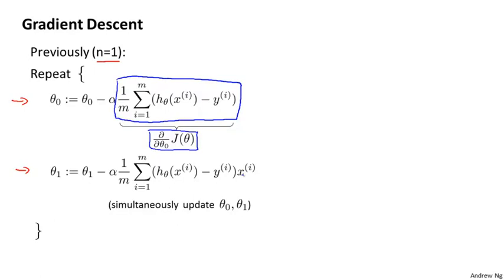There's one little difference, which is that when we previously had only one feature, we would call that feature xi. But now, in our new notation, we would call this x superscript i subscript 1 to denote our one feature. So that was for when we had only one feature.